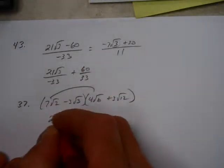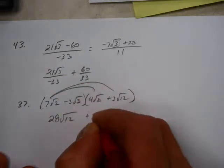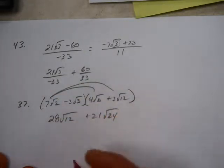So if I go ahead and distribute, outsides 28, insides 12, outsides 21, insides 24.